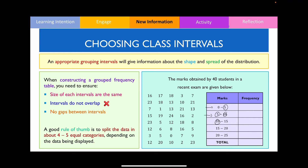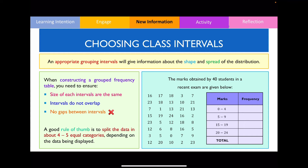Finally, another common mistake is creating gaps between class intervals. In this example, there is a class interval missing between the values 10 to 14. Even if there were no actual values between 10 and 14 in the original dataset, we still cannot exclude that class interval — we must represent it in the table and list 0 as its frequency. On the next slide, I'll show you a correct grouped frequency table for this dataset.